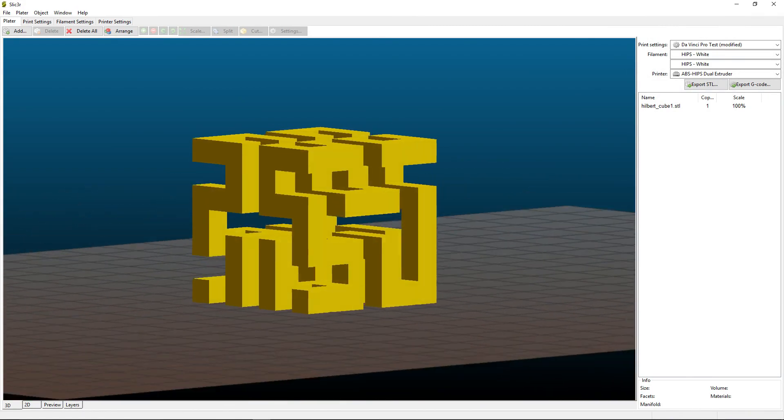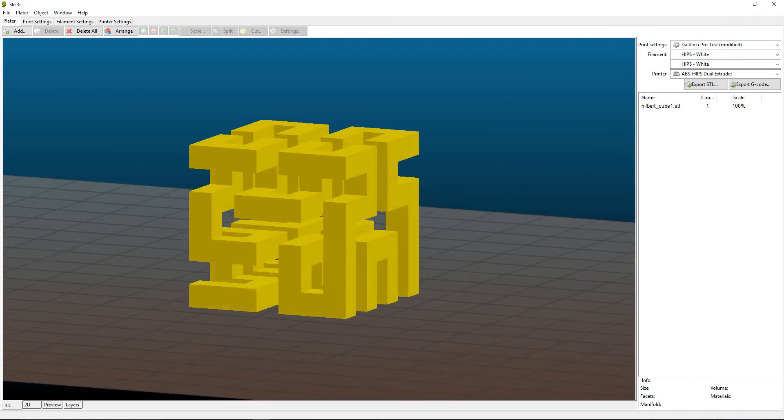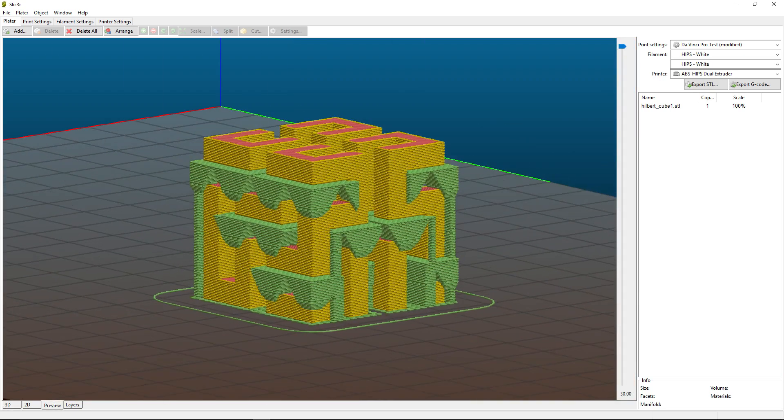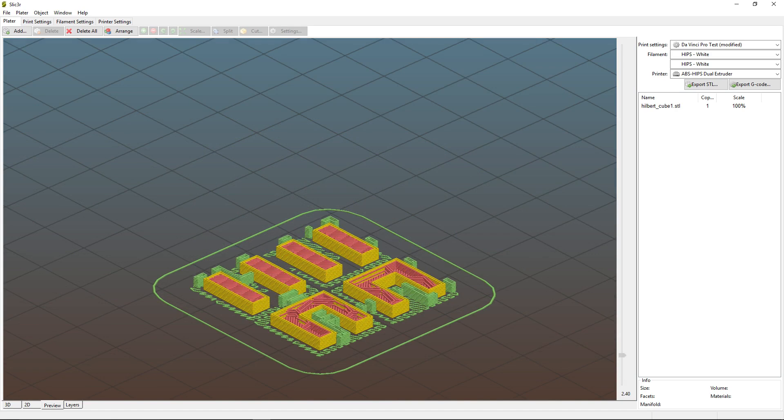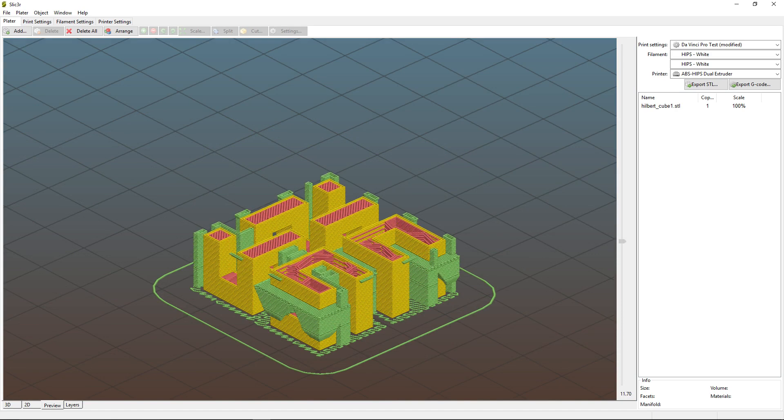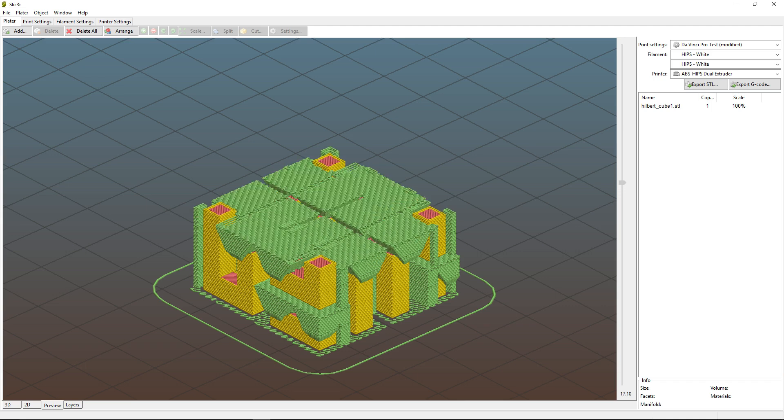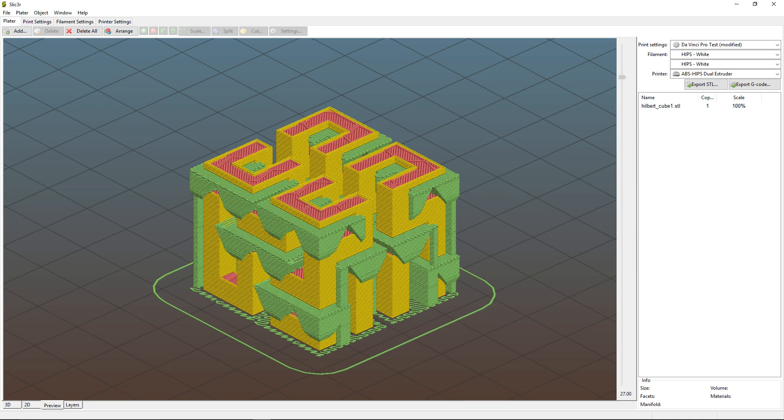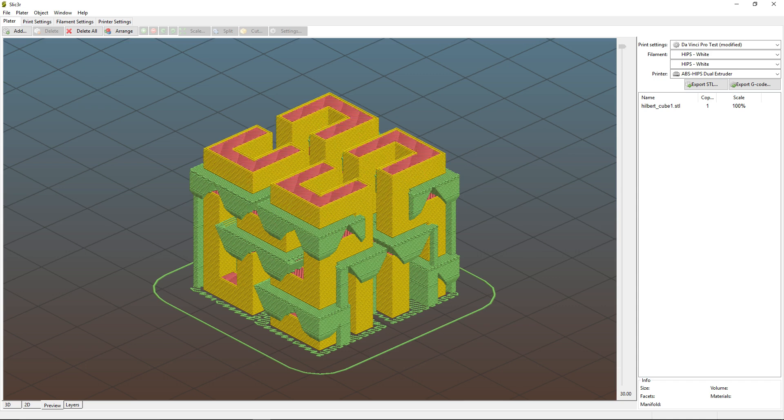This is going to allow us to print objects which would normally be impossible to print. Take, for example, this Hilbert cube. This is a very complex part with many completely horizontal overhangs. These overhangs would require support material that would be removed afterwards, which would be a difficult thing to do normally. With dissolvable support, however, you don't have to worry about being able to reach in with pliers.